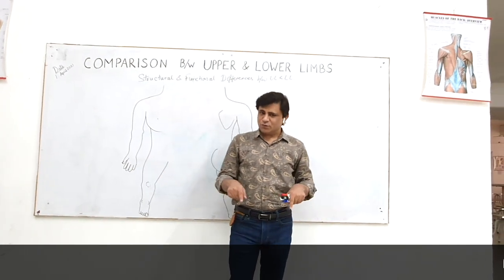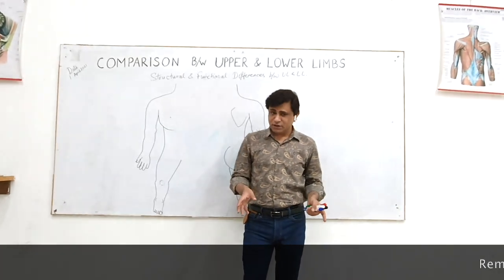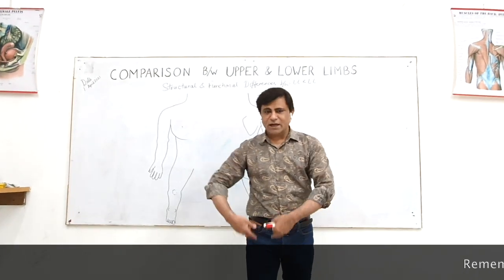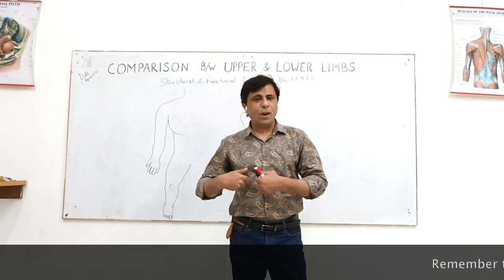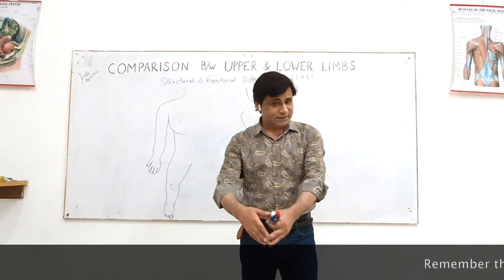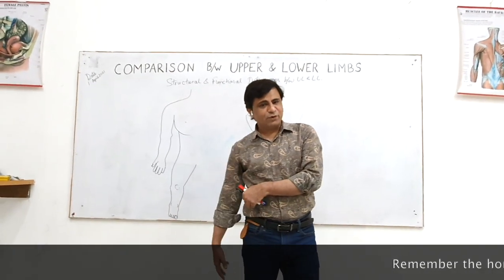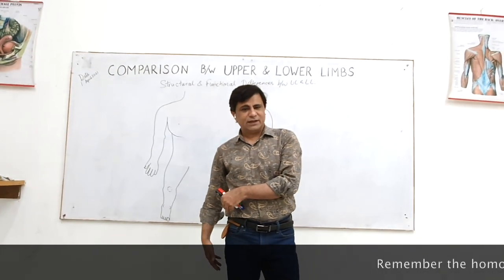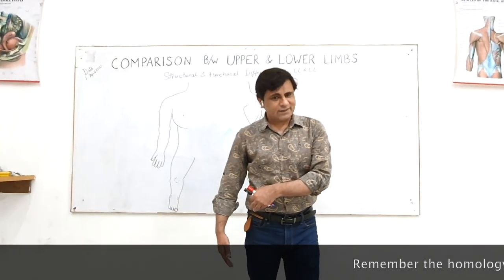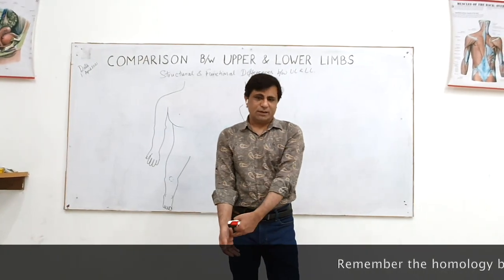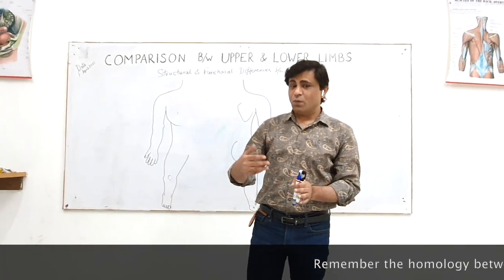In the case of lower limb, the reverse thing happens. The front of the entire lower limb — front of thigh, front of leg, dorsum of foot — they are all extensors, same as the back of the upper limb. The back of the lower limb — back of thigh, back of leg — they are all flexors, same as the front of the upper limb. So the compartments are changed by 180 degrees.